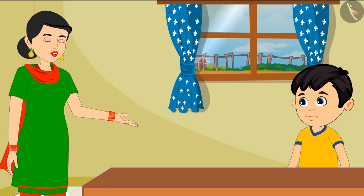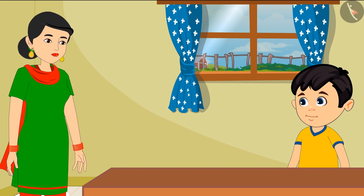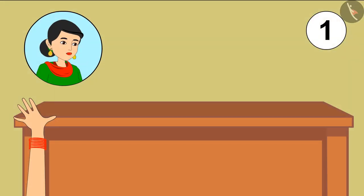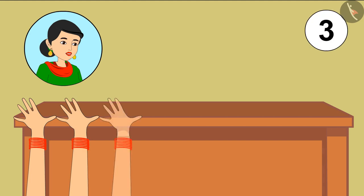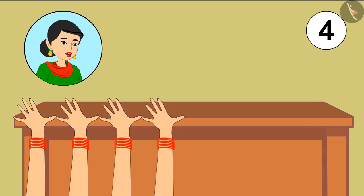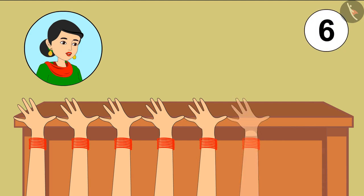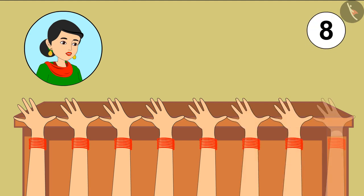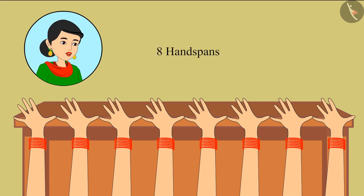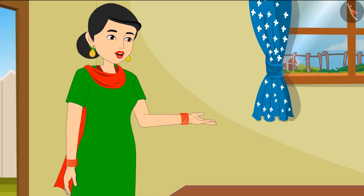'Look at me: one, two, three, four, five, six, seven, eight. Did you see, Chotu? This table is eight hand-spans long when measured with my hand. Now you two measure it.'